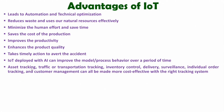Asset tracking is something you might have observed with many applications. For example, if you order something on Amazon, you can track the asset. This includes asset tracking, traffic or transportation tracking, inventory control, delivery, surveillance, individual order tracking, and customer management, all of which can be made more cost-effective with the right tracking system. If you order something from Amazon or Flipkart, you can track your product, and even that product can be tracked by the service provider as well. Because of that, it makes the system cost-effective and the user will have a better experience.